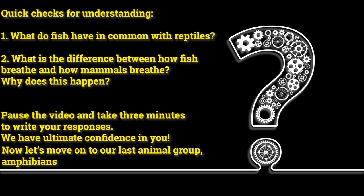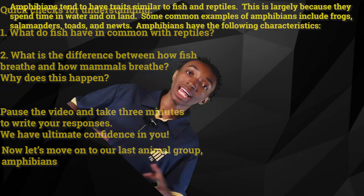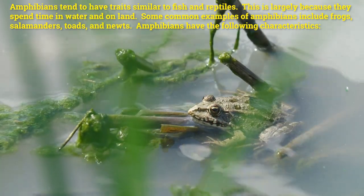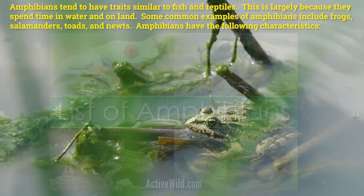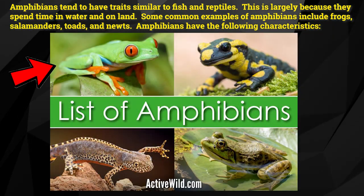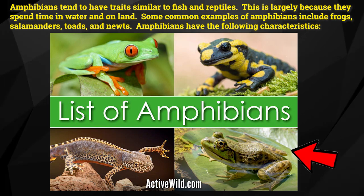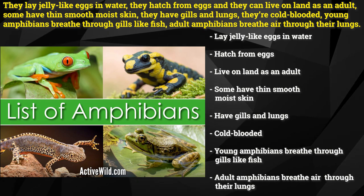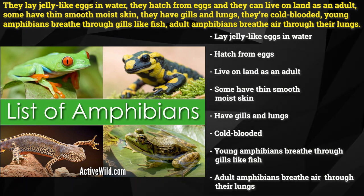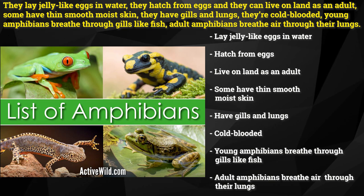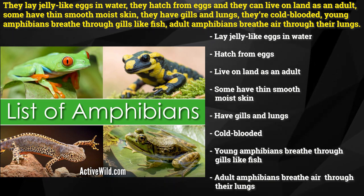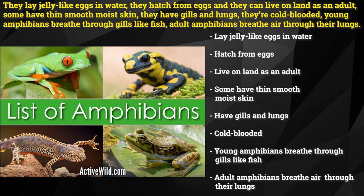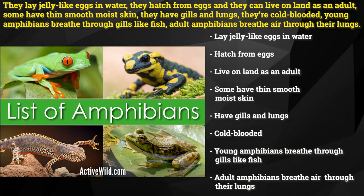Now let's move on to our last animal group, amphibians. Amphibians tend to have traits similar to fish and reptiles. This is largely because they spend time in water and on land. Some common examples of amphibians include frogs, salamanders, toads, and newts. Amphibians have the following characteristics: they lay jelly-like eggs in water, they hatch from eggs and can live on land as an adult, some have thin, smooth, moist skin, they have gills and lungs, they're cold-blooded. Young amphibians breathe through gills like fish, while adult amphibians breathe air through their lungs.